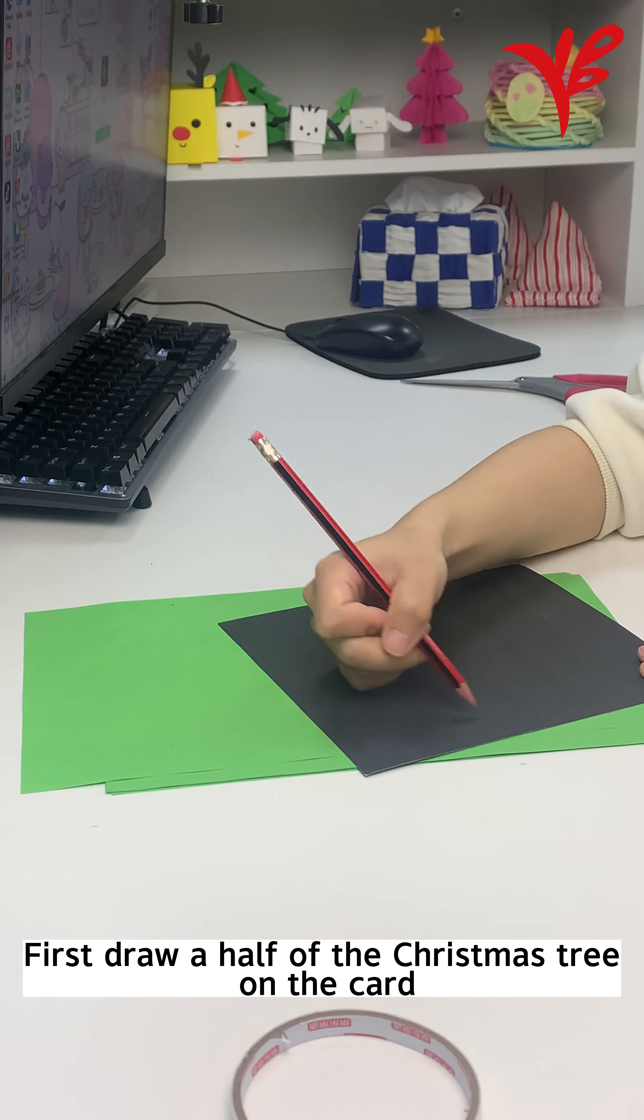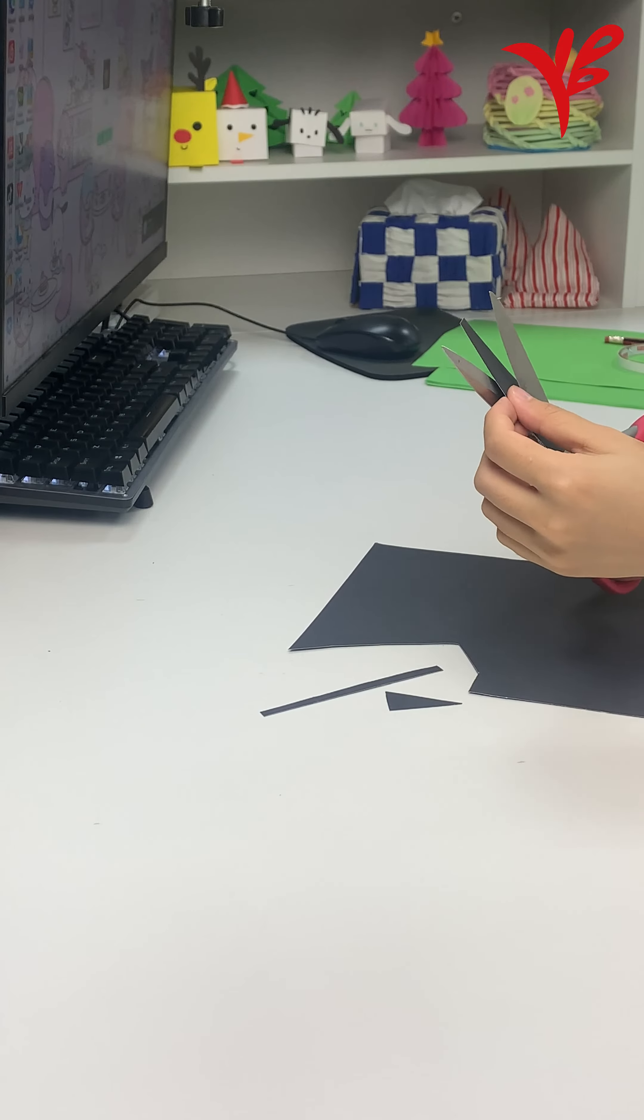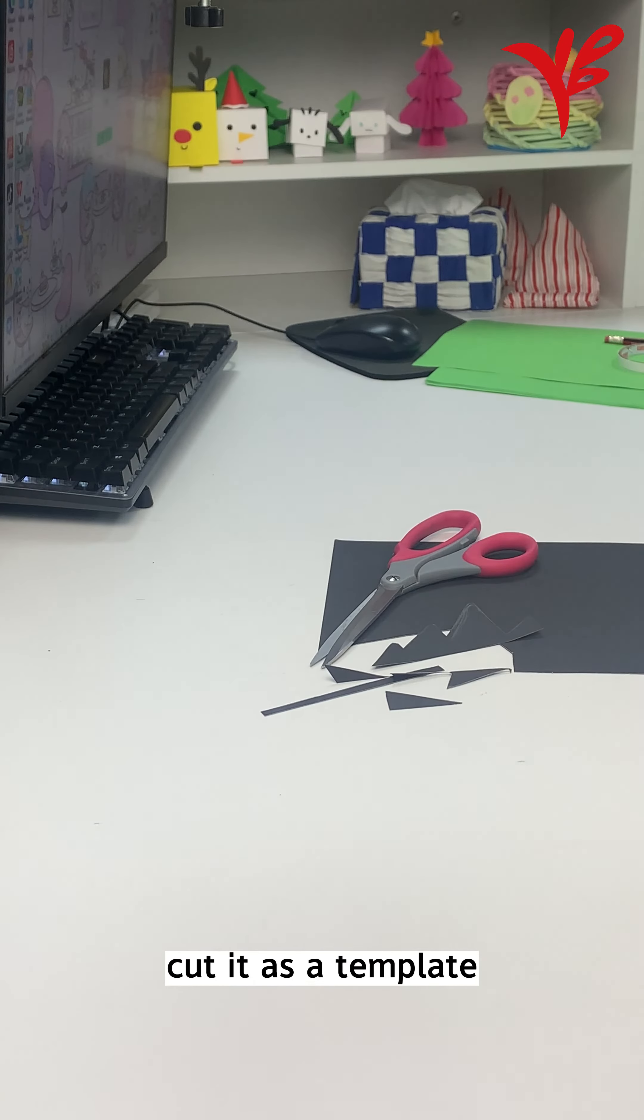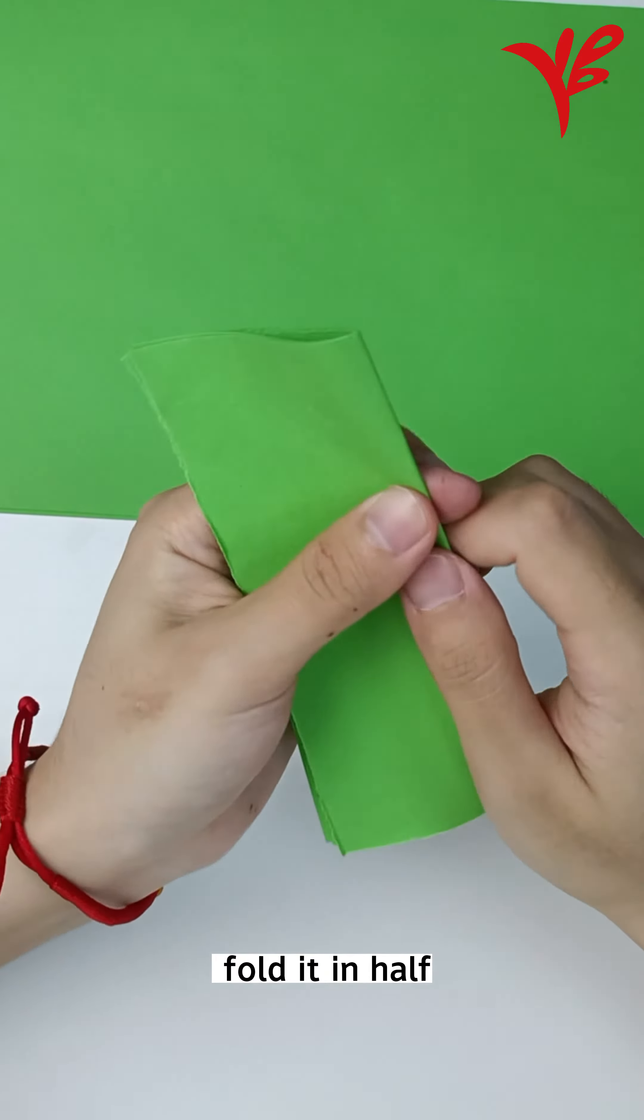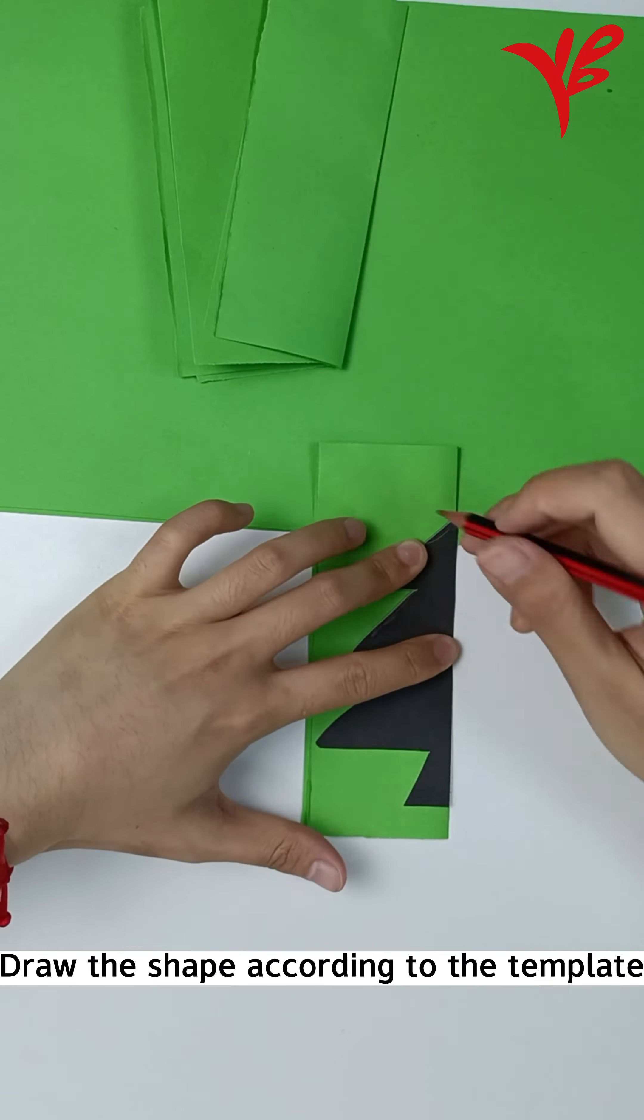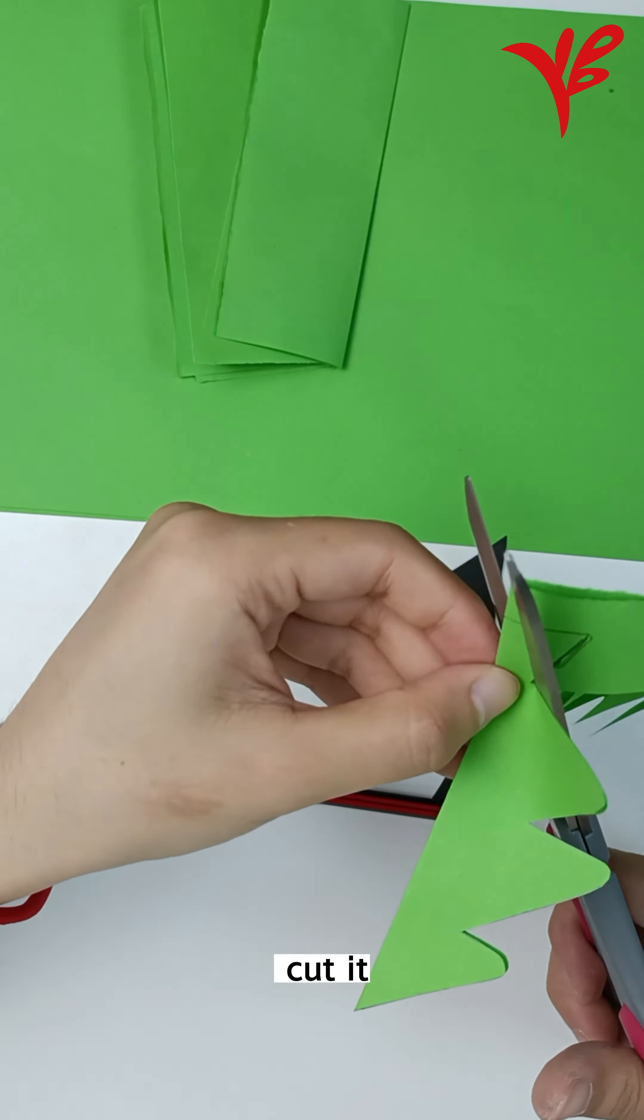First, draw half of the Christmas tree on the card and cut it as a template. Cut the paper into proper size, fold it in half, draw the shape according to the template, and cut it.